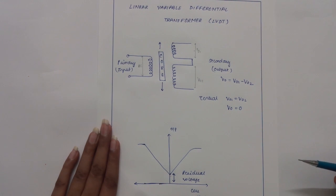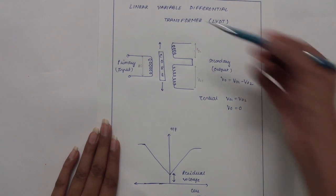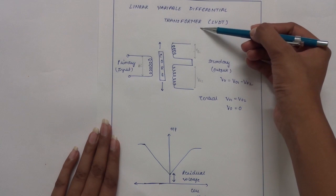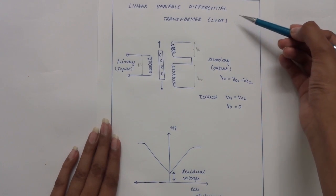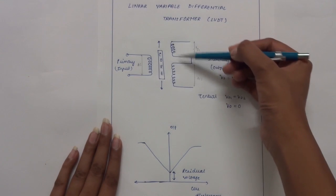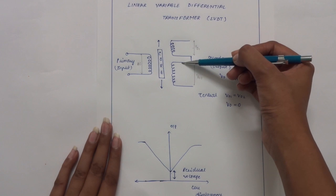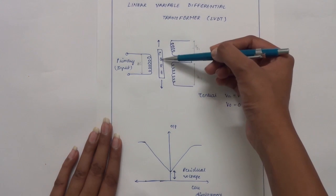Hello friends, today we present you with another video on linear variable differential transformer, also known as LVDT. It consists of a primary coil and two exactly similar secondary coils with a rod-shaped magnetic core positioned centrally inside the coil.